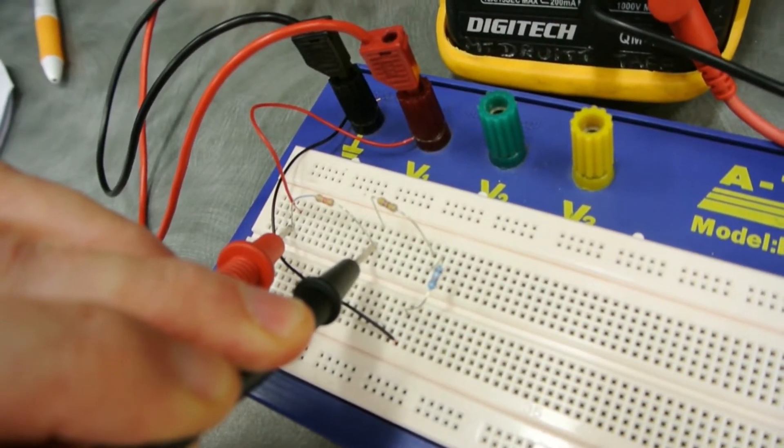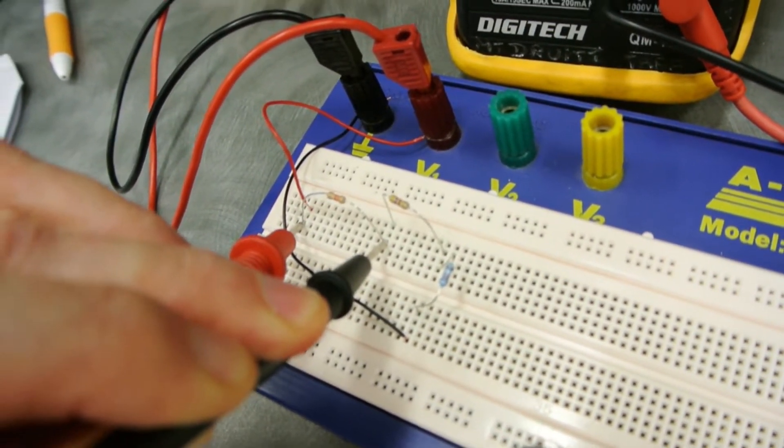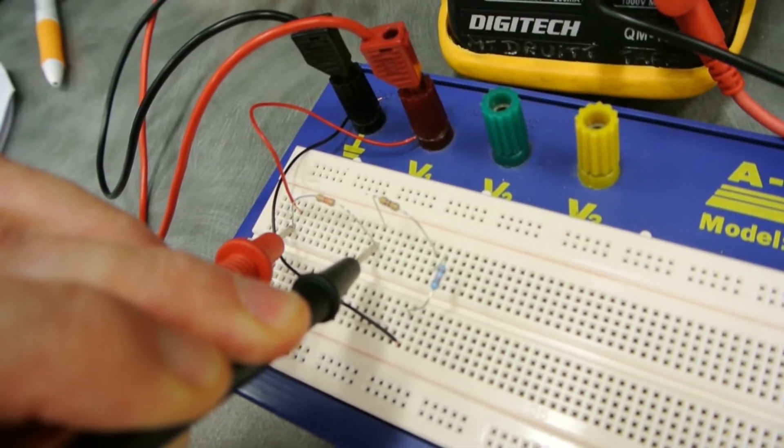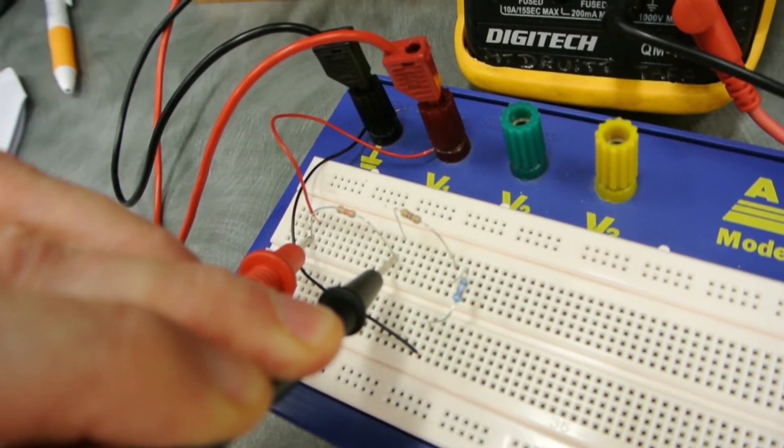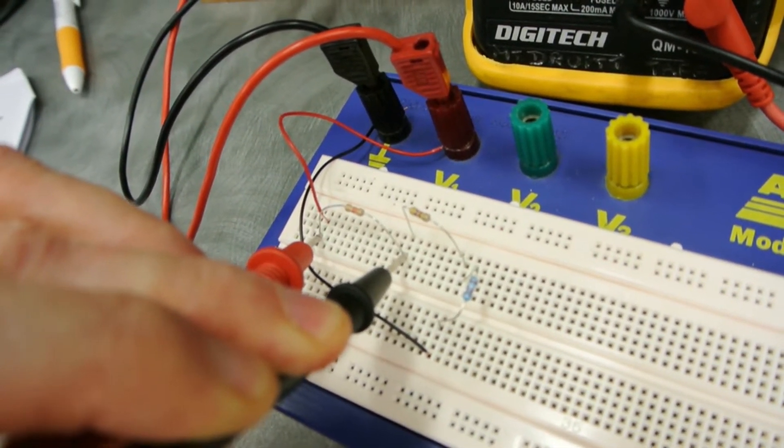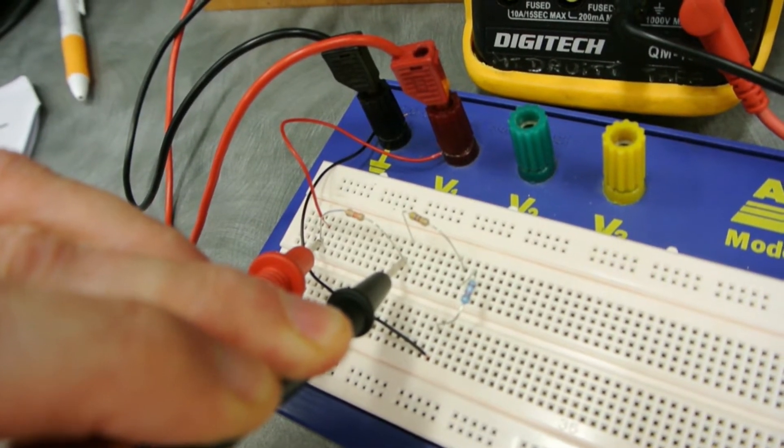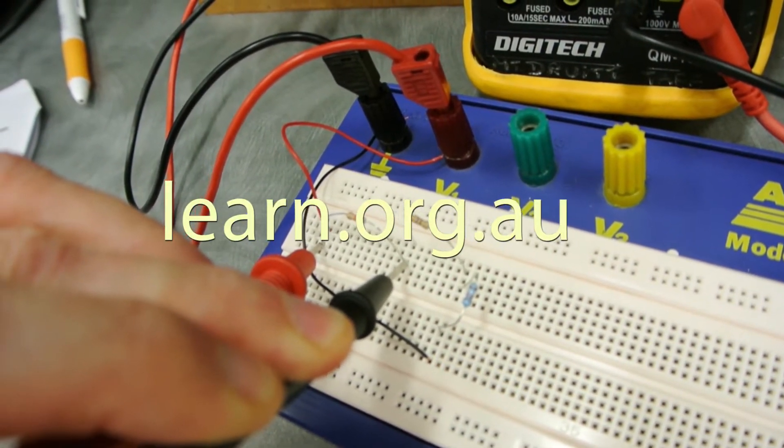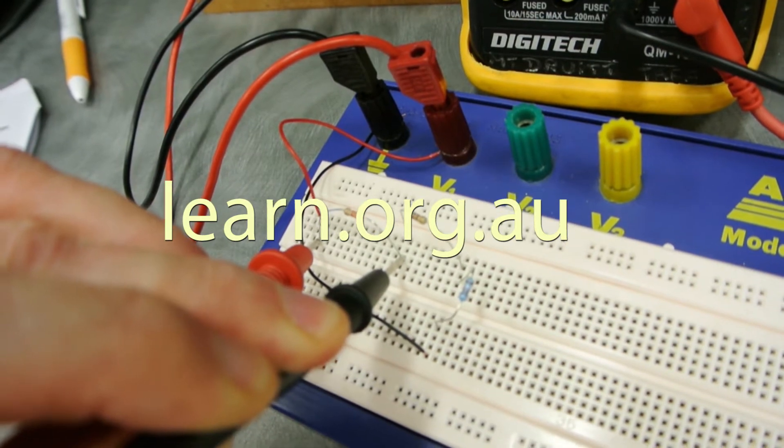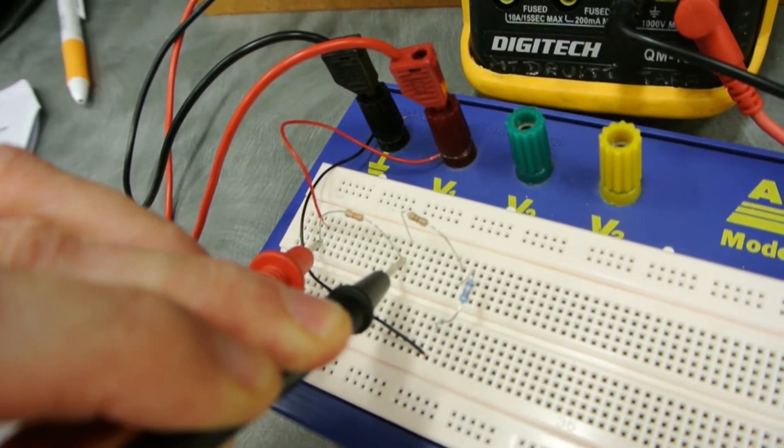Table 1 of the lab handout requires that we record the voltage across each resistor. We're required to both measure and record the voltage and run some mathematics using Ohm's law and work out what the voltage would be theoretically.